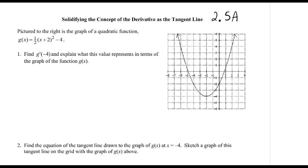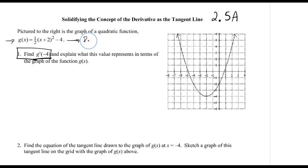Our first question asks us to find g prime of negative 4. To find the derivative of g, we've really only learned one approach so far, and that is the power rule, which means this needs to be rewritten in polynomial form.